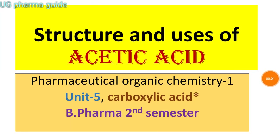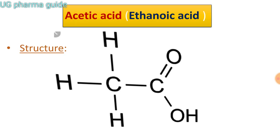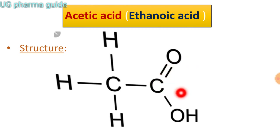In this video, I am going to discuss about structure and uses of acetic acid. Acetic acid, ethanoic acid के नाम से भी जाना जाता है. Acetic acid के structure में एक carboxylic group है और एक methyl group है.